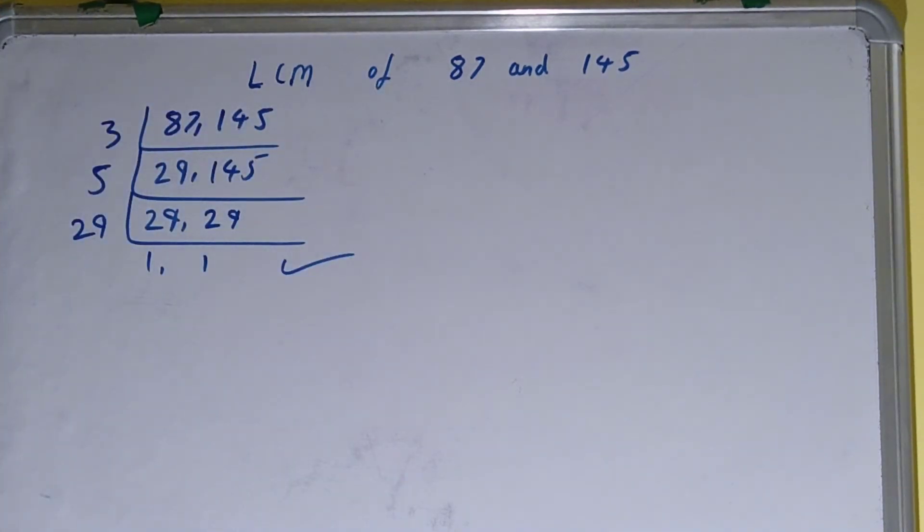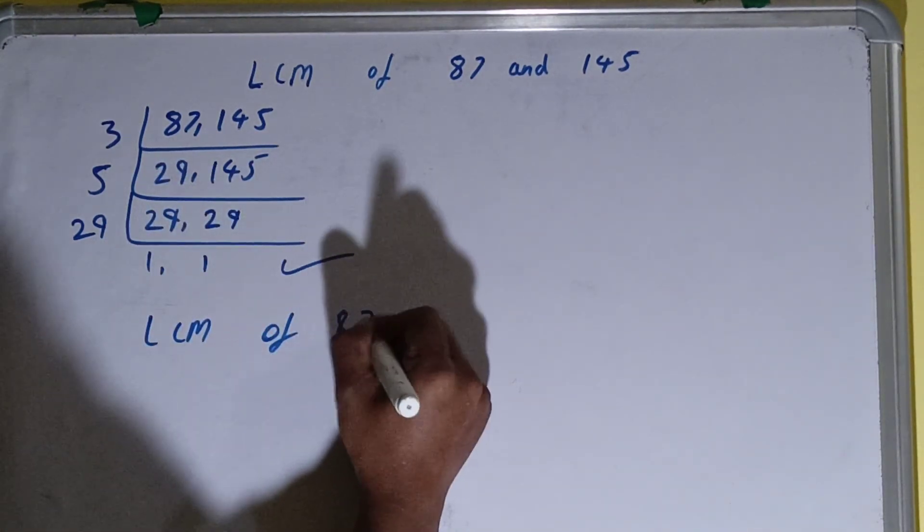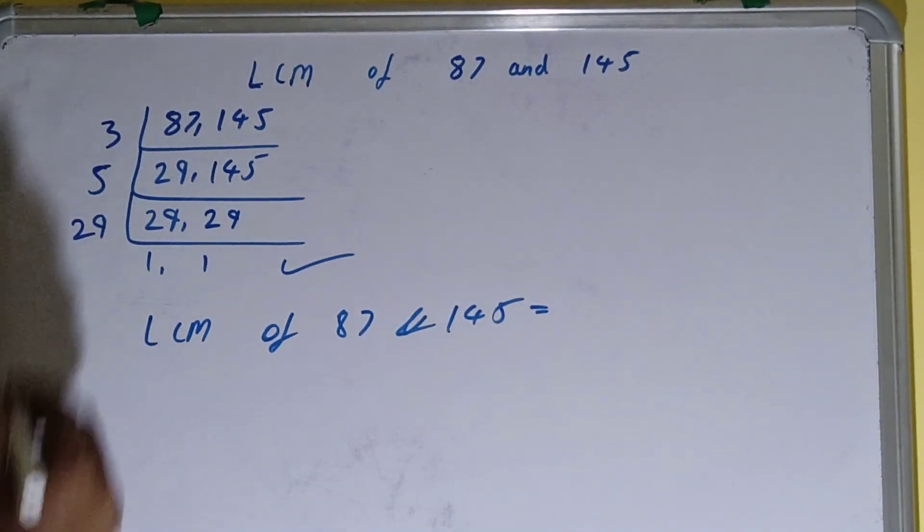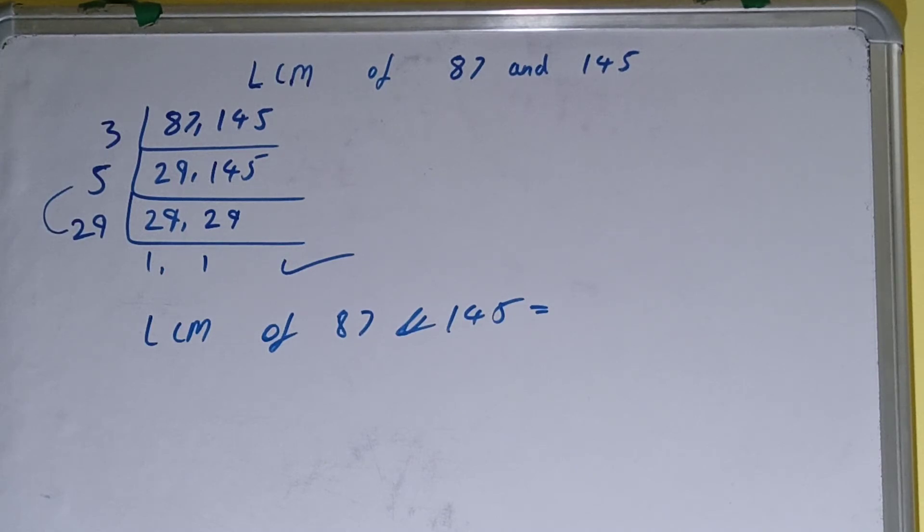Once we get that, we need to stop, and we need to do one last thing. That is, LCM of 87 and 145 is equal to multiplying whatever we have on the left-hand side. That is 29 times 5 is 145 into 3 is 435.